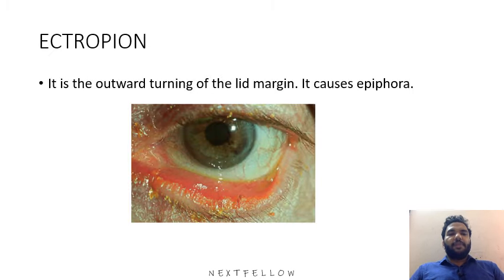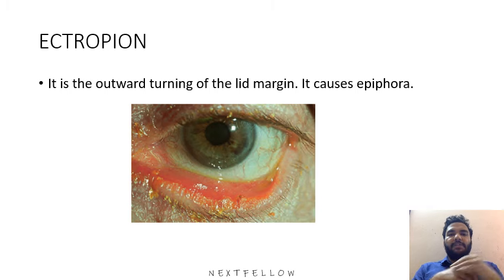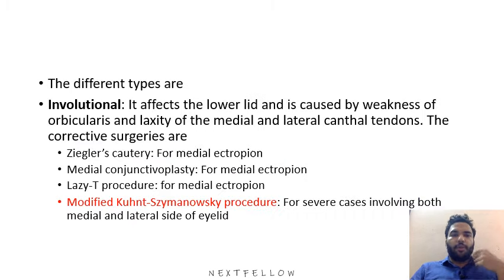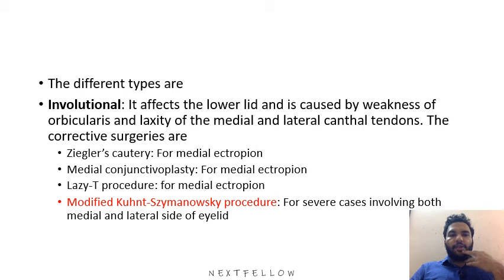Then comes ectropion, which is the outward turning of the lid margin. It causes epiphora — watering of the eye — because the lid margin is everted. The involutionary type affects the lower lid and causes weakness of the orbicularis muscle and laxity of the medial and lateral canthal tendons.